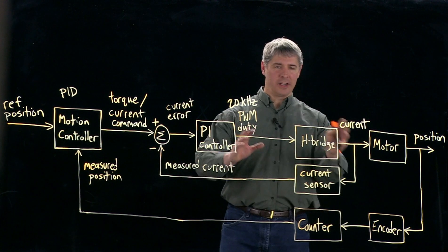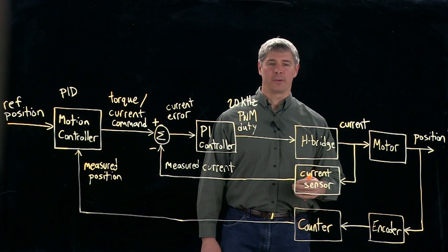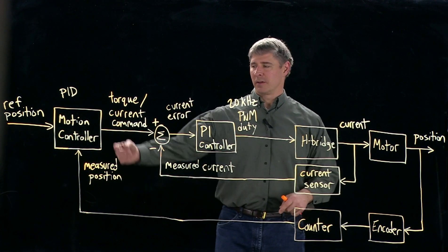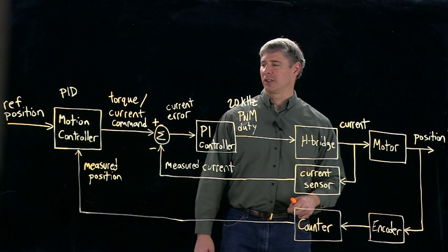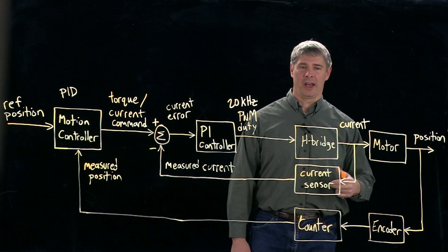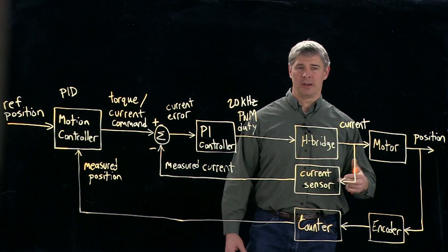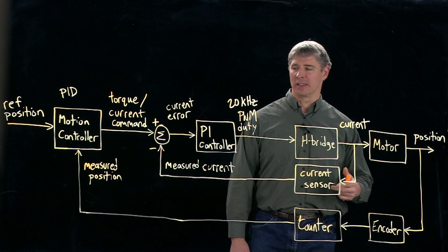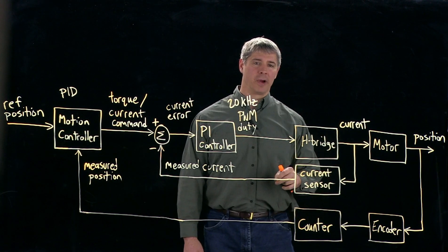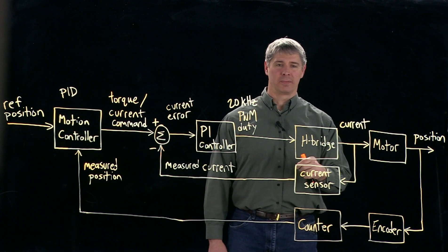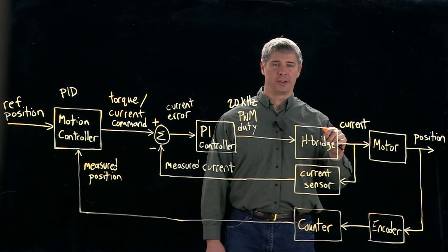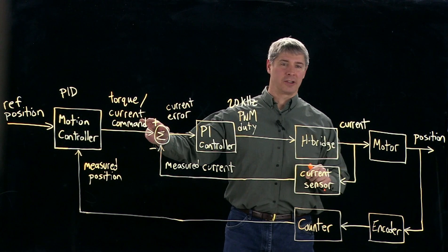And so for that reason, this inner loop typically runs at a higher frequency than the outer loop. So maybe the outer loop changes its torque command or current command once every five milliseconds. Then the inner loop is going to be running much faster than that, trying to make sure that the current reaches that level before we go on to the next current command here.